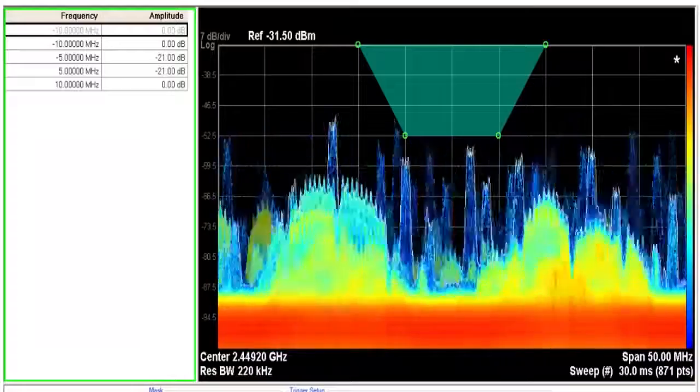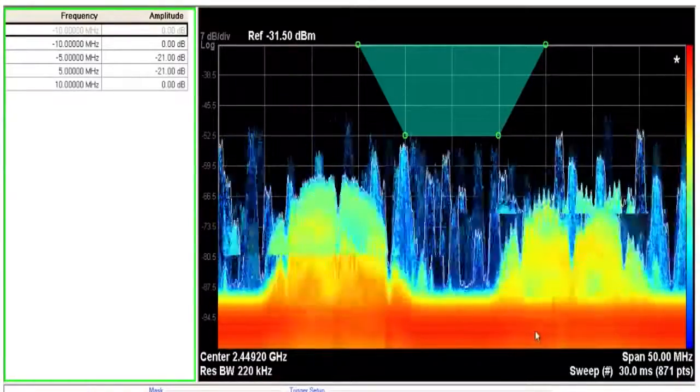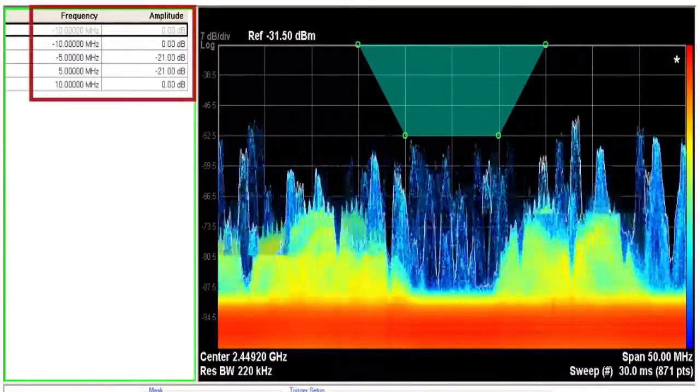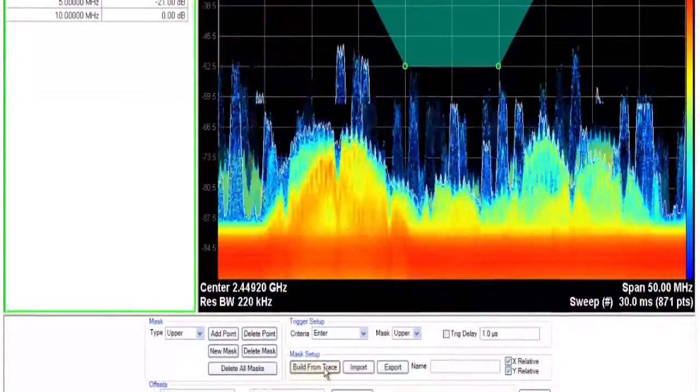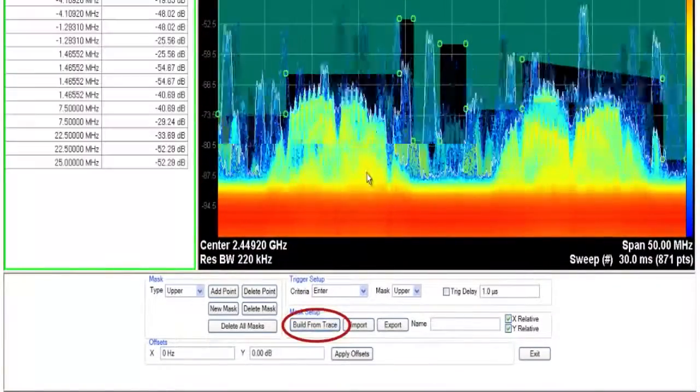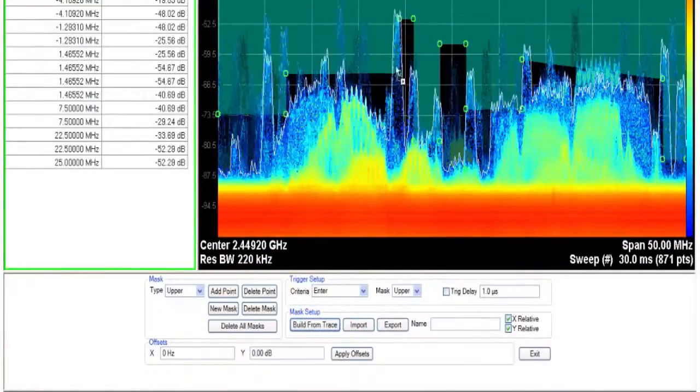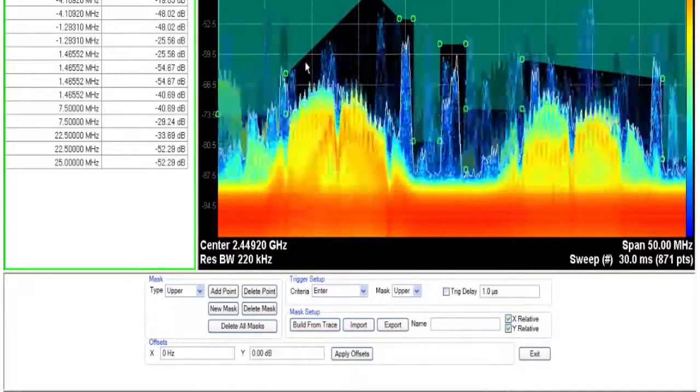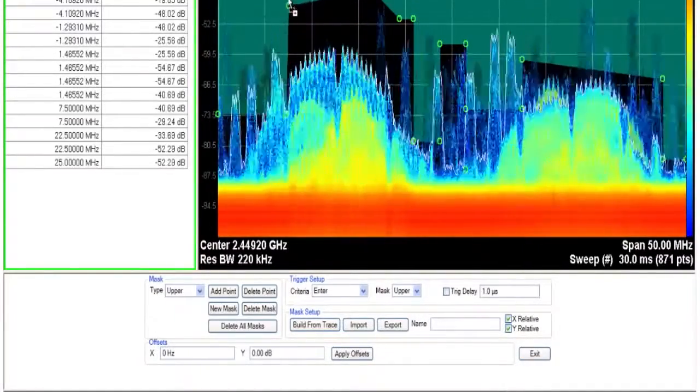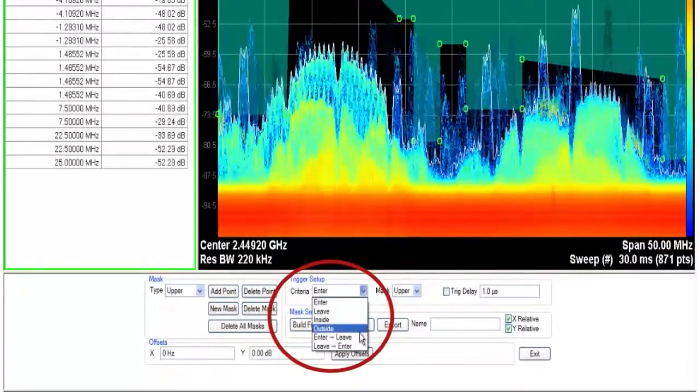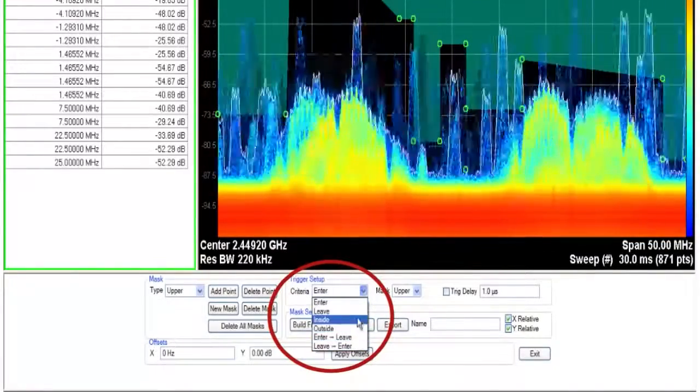Real-time processing also supports a flexible frequency mask trigger. The mask can be manually entered with precise detail or automatically generated from measured spectrum. Any mask can be easily and intuitively edited. Masks can be upper or lower or both, and trigger logic criteria can be selected to capture just the signal behavior you're looking for.